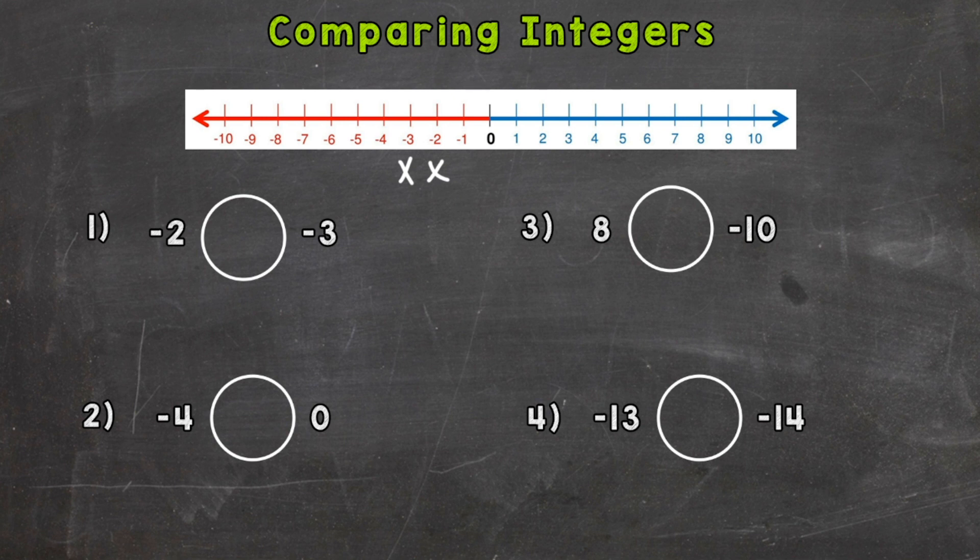Now, the further to the right on a number line that a number is, the greater the value. Again, whichever number is further to the right, that number is going to be greater. So which one's further to the right? Negative 3 or negative 2? Well, negative 2 is. So that is our greater number here.